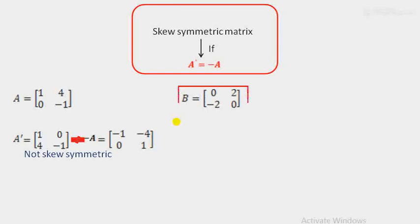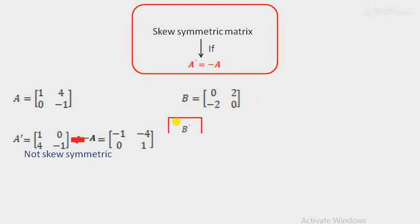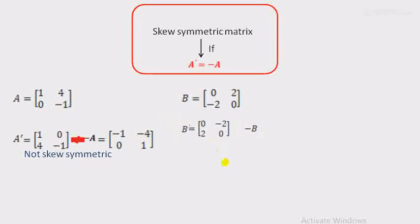Consider another example, matrix B. Again we have to check whether it is skew symmetric or not. First find the value of B', the transpose of matrix B. The elements 0, 2 in row form are written as column 0, 2. And minus 2, 0 in row form becomes column minus 2, 0.